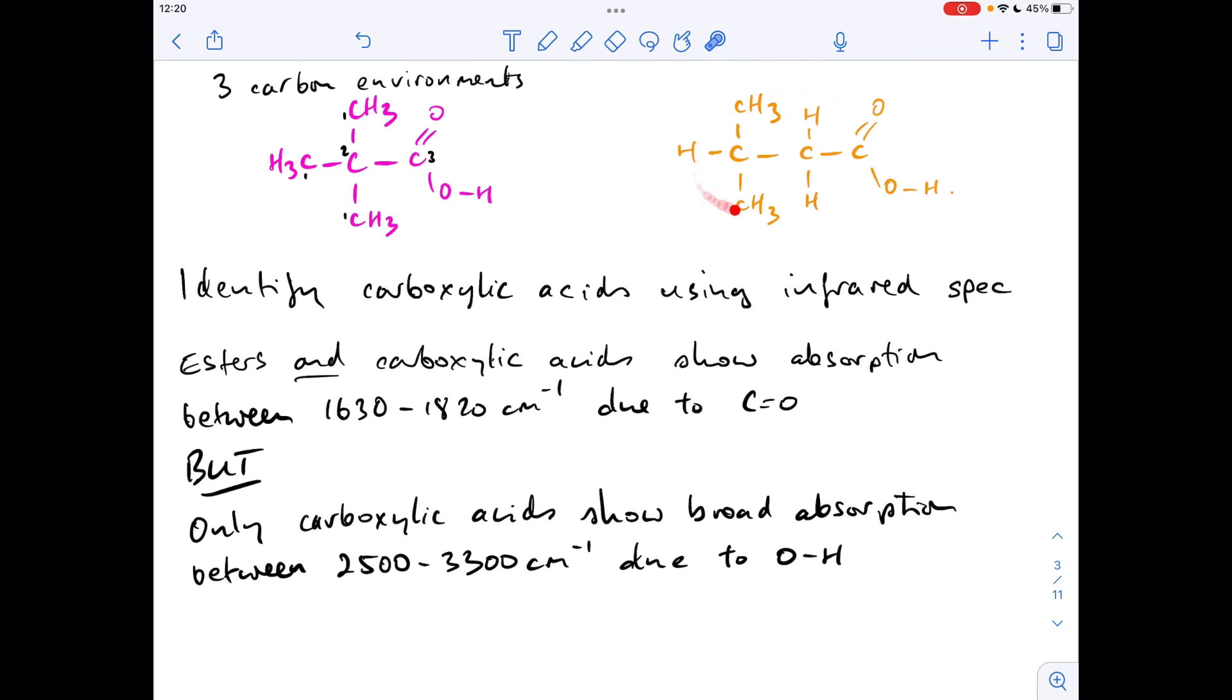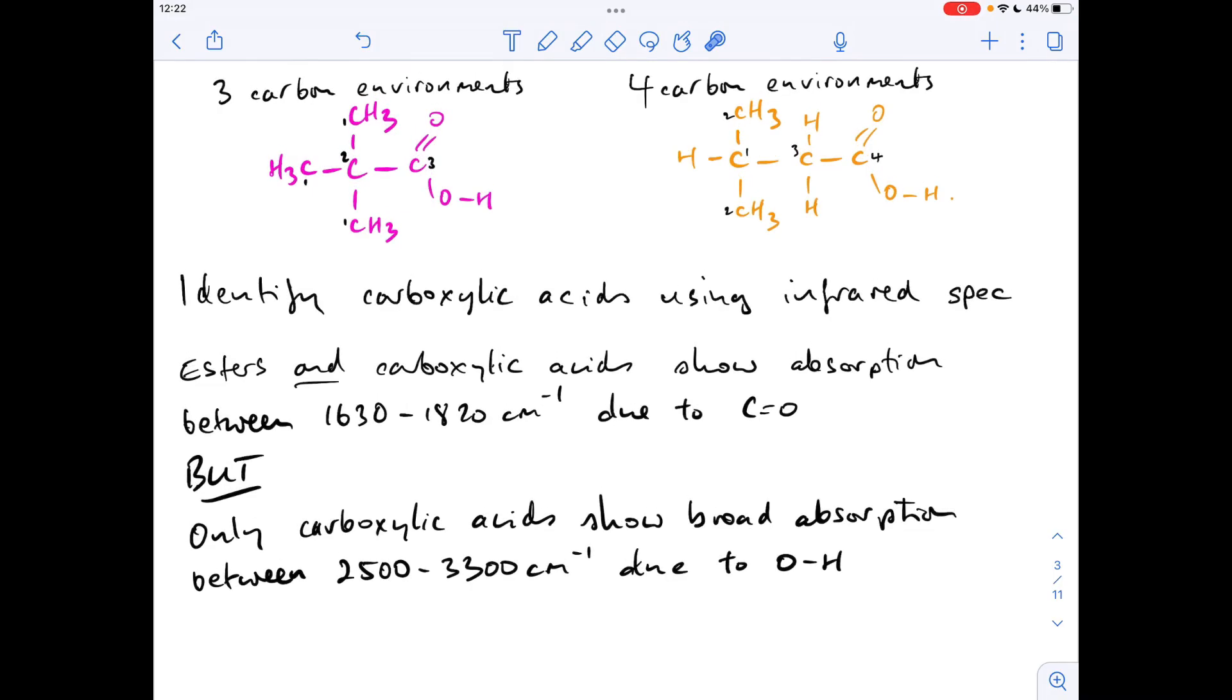So this one has four carbon environments, whereas the pink one only had three. And obviously because of that, you would see three peaks in the carbon-13 NMR spectrum for the pink one, but you'd see four peaks for the orange one.